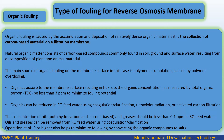Organic fouling is caused by the accumulation and deposition of relatively dense organic materials — it is the collection of carbon-based material on a filtration membrane. Natural organic matter consists of carbon-based compounds commonly found in soil, ground and surface water, resulting from decomposition of plant and animal material. The main source of organic fouling on the membrane surface in this case is polymer accumulation, caused by polymer overdosing.